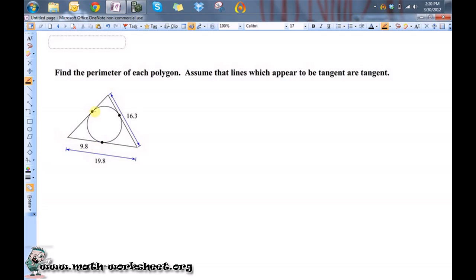Because we're supposed to assume any of these lines that appear tangent are tangent, that means that we can create quite a few right angles off of these points where the tangent lines intersect the circle.